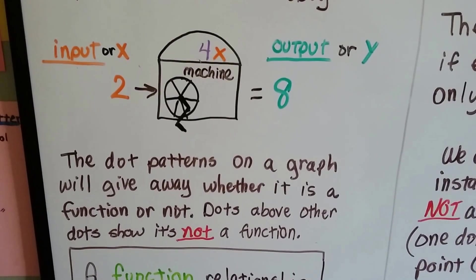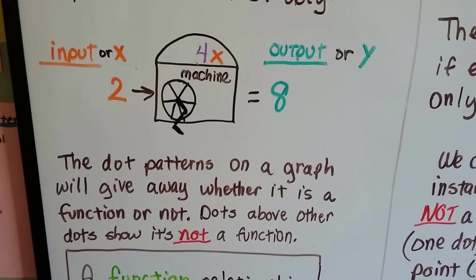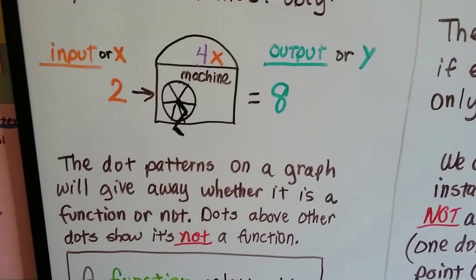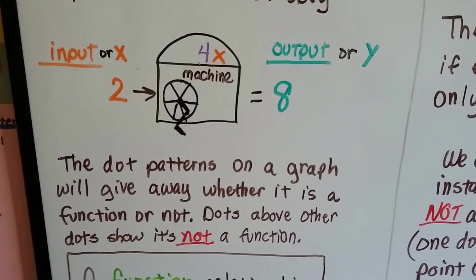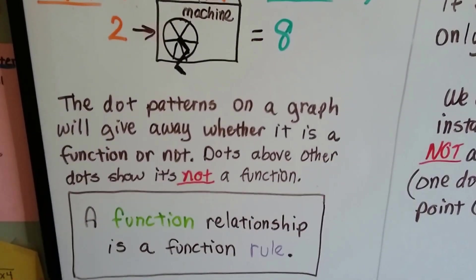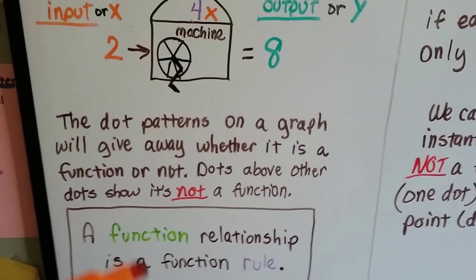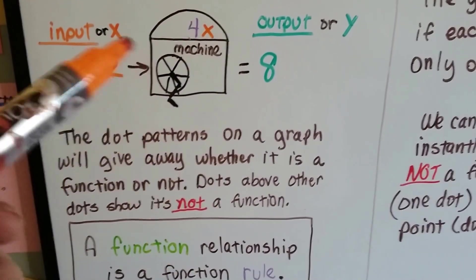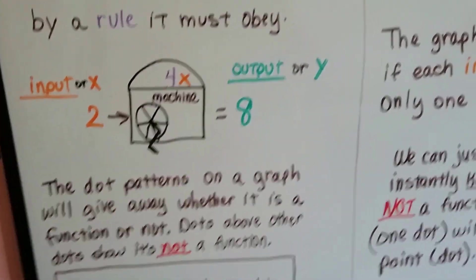Well, the dot patterns on a graph will give away whether it's a function or not. Dots are above each other show it's not a function. That's the relationship. A function relationship is a function rule, like that 4x. That's the rule for this function.